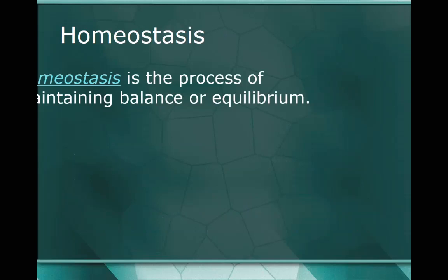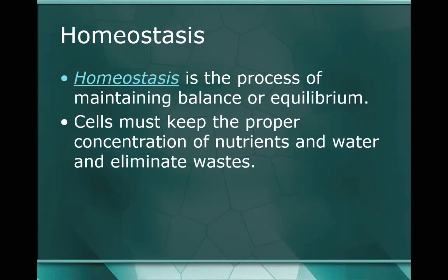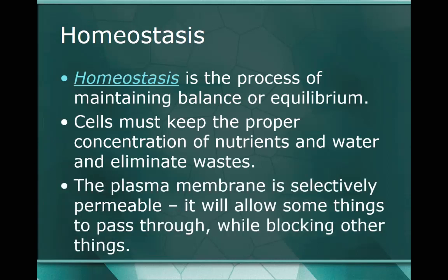Homeostasis is the process of maintaining balance or equilibrium. The prefix homeo should remind you of homo, which means same. So homeostasis is the process of maintaining balance or sameness on both sides of the membrane, organism, or cell. Cells must keep proper concentration of nutrients and water coming in to keep the cell fed and hydrated, and must eliminate waste so the cell doesn't become cytotoxic. The plasma membrane is selectively permeable, meaning it allows some things to pass through - the ones it wants - while blocking other things that it shouldn't have internally.